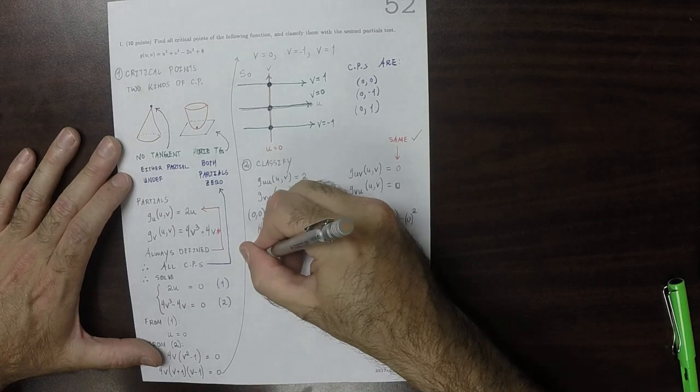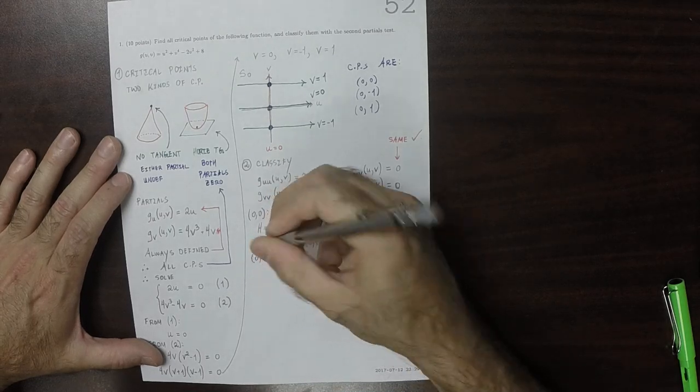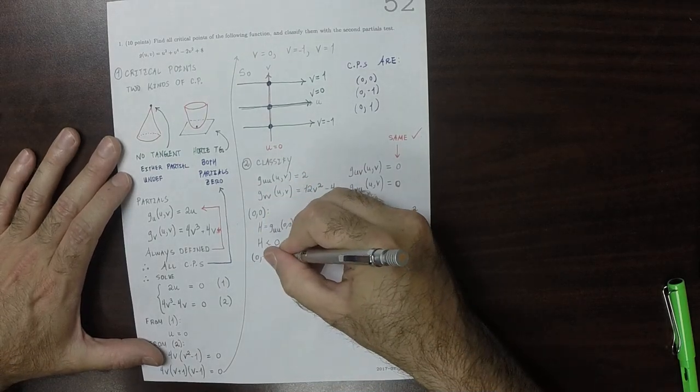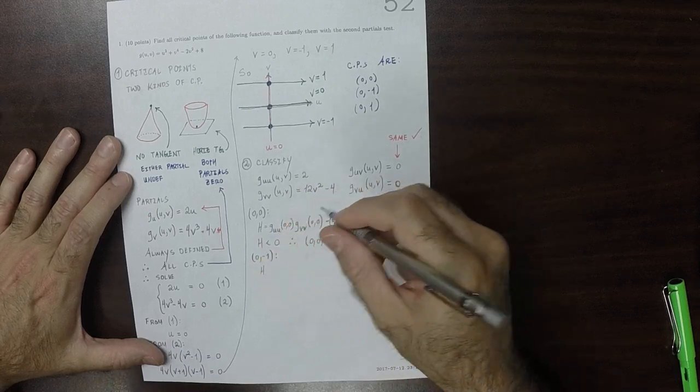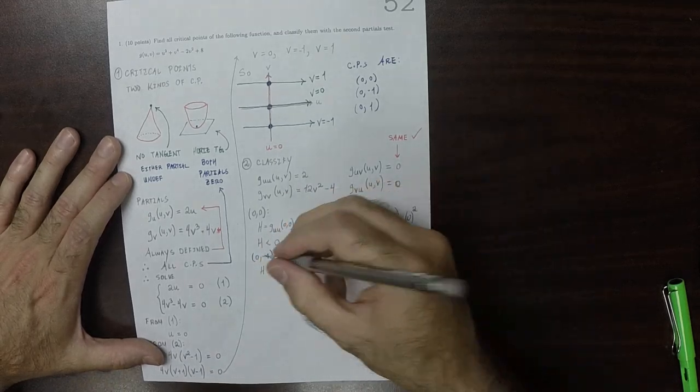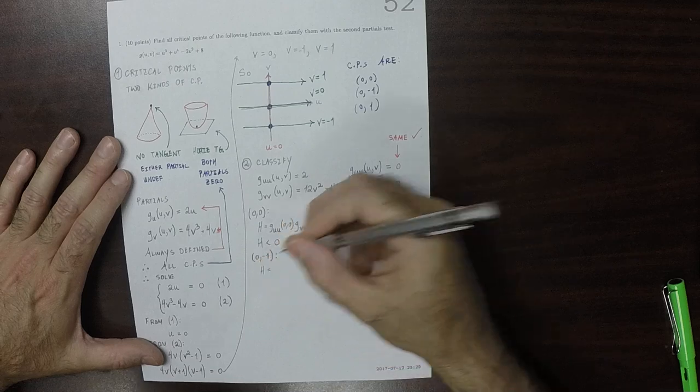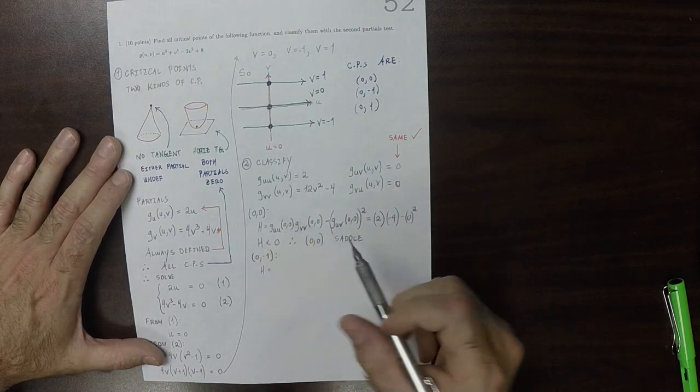Zero, negative one. Again, that's the formula for the classifier, but at zero, negative one. So I'll just plug that in. So at zero, negative one, the pure U partial is two.